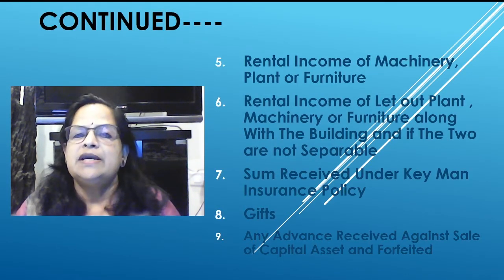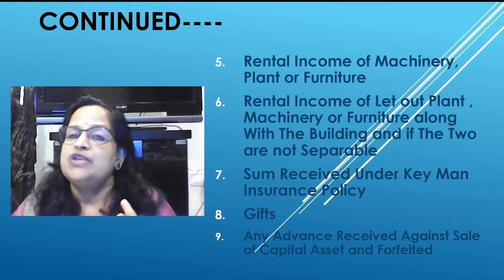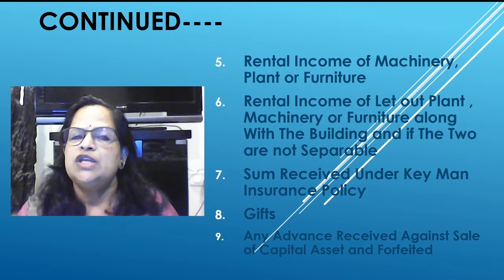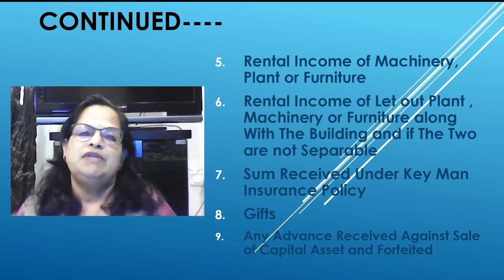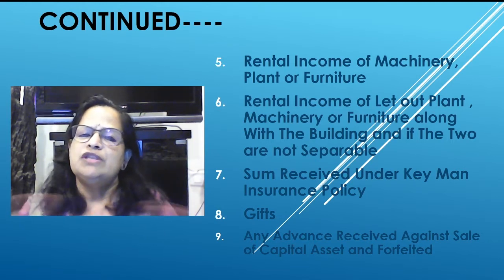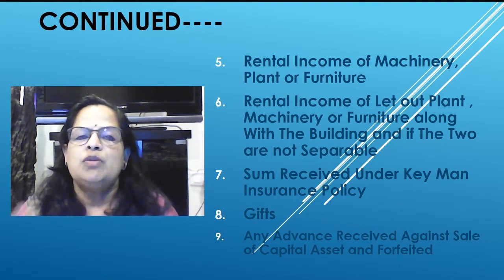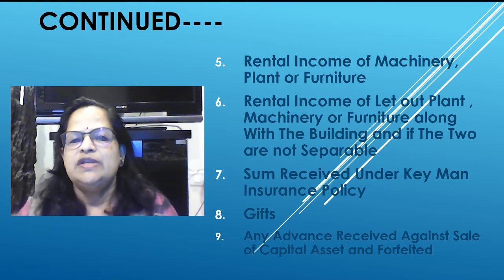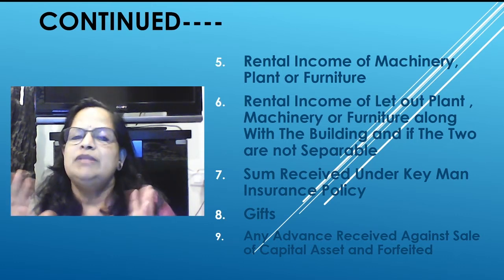Next is rental income from machinery, plant, or furniture. For example, builders may take machinery like JCBs or concrete mixers on rent during construction. That rental income comes under income from other sources. Similarly, a fully furnished apartment rented out — the income attributable to the furniture — also comes here. If a building is let out along with plant, machinery, or furniture and the two are not separable, that rental income also falls under income from other sources.